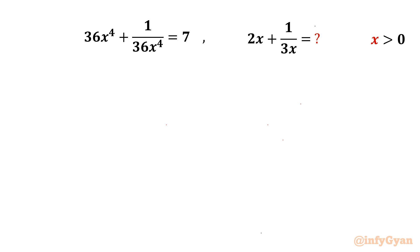Welcome back to InfiGyaan, my dear friends. In today's video we are going to solve one very interesting question from algebraic expressions. We have to evaluate 2x plus 1 over 3x for positive x, given the equation 36x⁴ plus 1 over 36x⁴ equals 7. Let's get started.